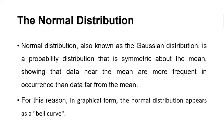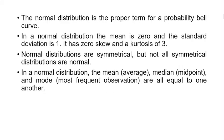Starting from the normal distribution. The normal distribution is also called the Gaussian distribution, and is a probability distribution that is symmetric about the mean, showing that the data near the mean are more frequent in occurrence than the data far away from the mean. For this reason, in graphical form, the normal distribution appears as a bell shape. In a normal distribution, the mean is zero and standard deviation is one. It has zero skewness and a kurtosis of three.